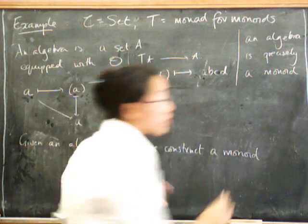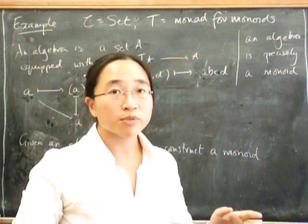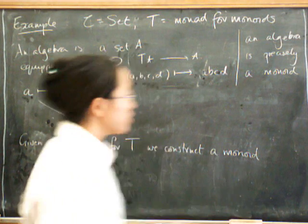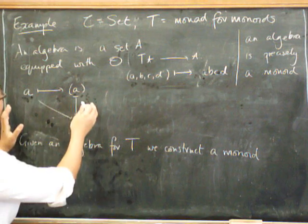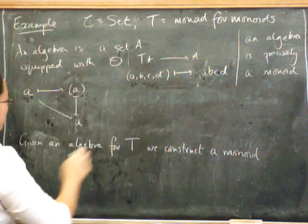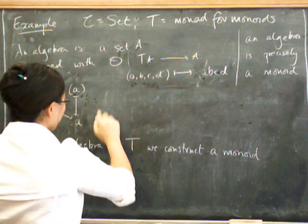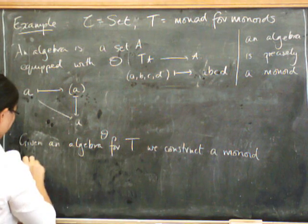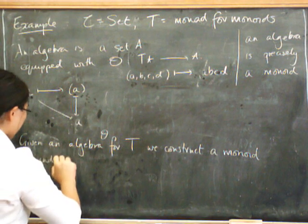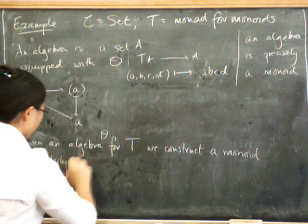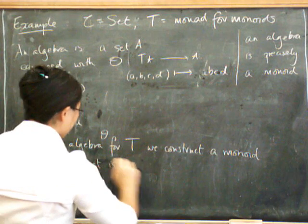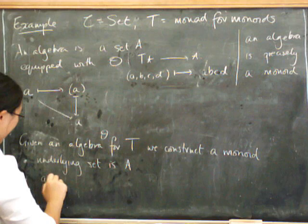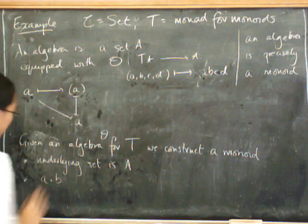Now, a monoid is usually defined as being a set equipped with a binary operation, which is unital and associative. So given an algebra, we've certainly got a set. Given an algebra beta like that, we construct a monoid. So the underlying set is A, and what's a times b going to be?